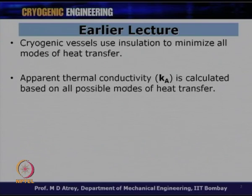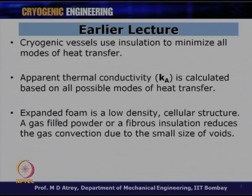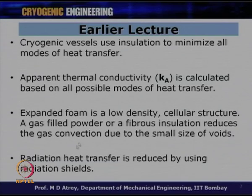The apparent thermal conductivity Ka is calculated based on all possible modes of heat transfer — it takes into account conduction, convection, radiation, etc. We found that expanded foam is a low density cellular structure. A gas filled powder or fibrous insulation reduces gas convection due to the small size of voids. Radiation heat transfer is reduced by using radiation shields, and putting many shields reduces radiation heat transfer.